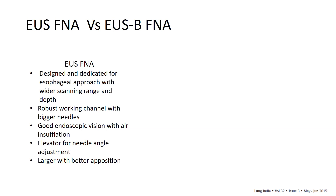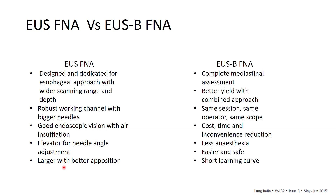If we want to approach from the endoscopic side, should we be referring to our gastroenterology colleagues — given the advantages of doing it with the EUS scope — or are we justified in doing it with the pulmonologist scope? If we do EUS-B FNA, we are accessing the complete mediastinum both from the respiratory side and from the esophageal side with the same scope, accessing the same mediastinal structures at a different angle.